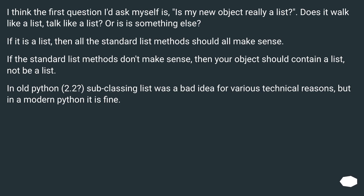I think the first question I'd ask myself is: is my new object really a list? Does it walk like a list, talk like a list? Or is this something else? If it is a list, then all the standard list methods should all make sense. If the standard list methods don't make sense, then your object should contain a list, not be a list. In old Python 2.2, subclassing list was a bad idea for various technical reasons, but in modern Python it is fine.